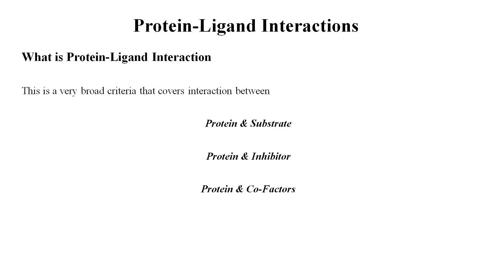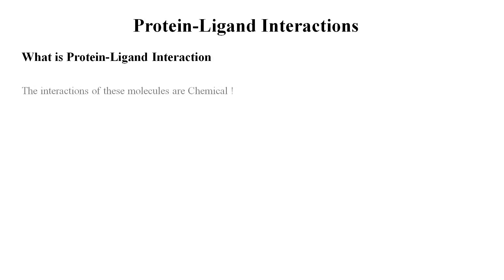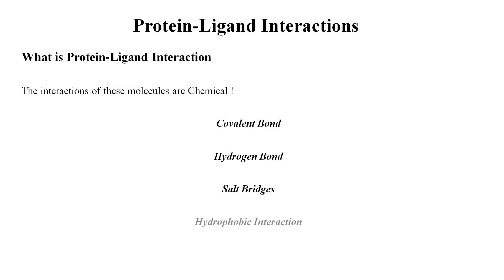All these interactions of the enzyme with the chemical moieties can be classified as chemical interactions. These chemical interactions include covalent bonds, hydrogen bonds, salt bridges, hydrophobic interactions, and van der Waals forces. Broadly, these chemical interactions can be classified as polar and non-polar interactions. Polar interactions basically include any charge-based or electron-based interactions, while non-polar interactions include any interaction that does not involve charge.